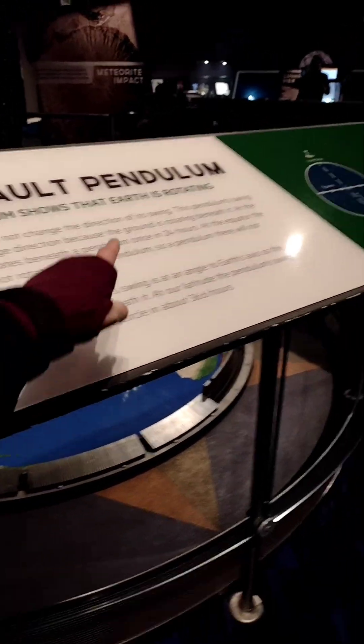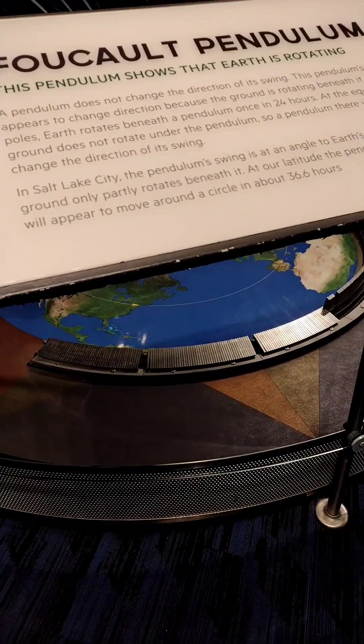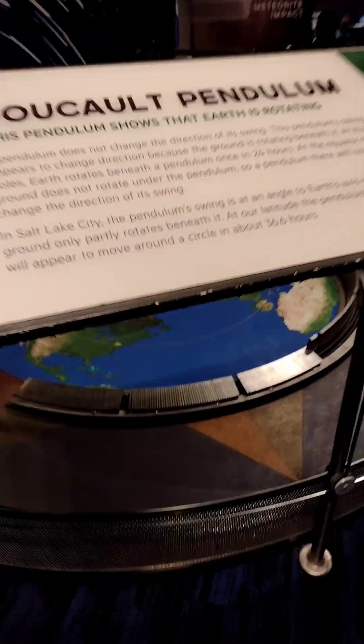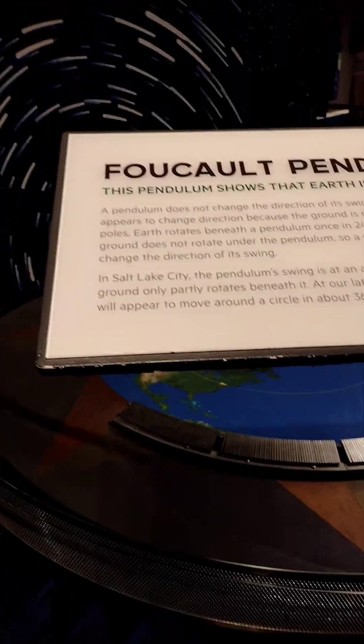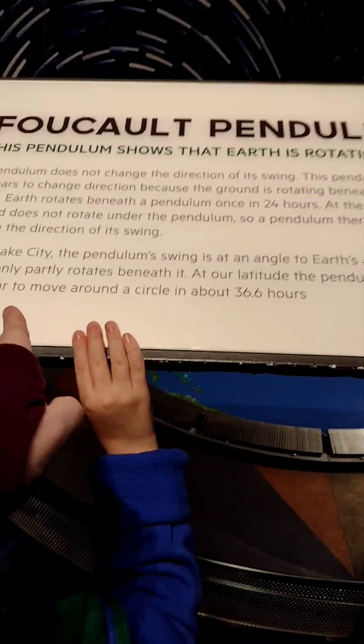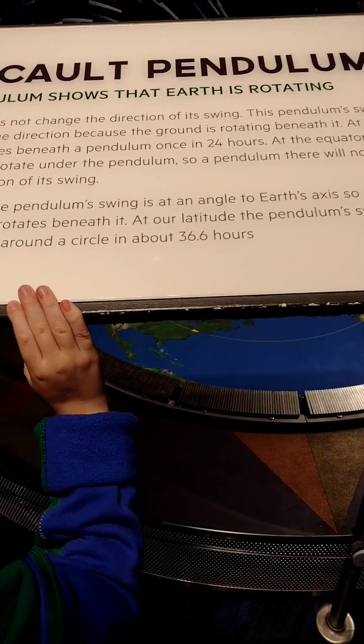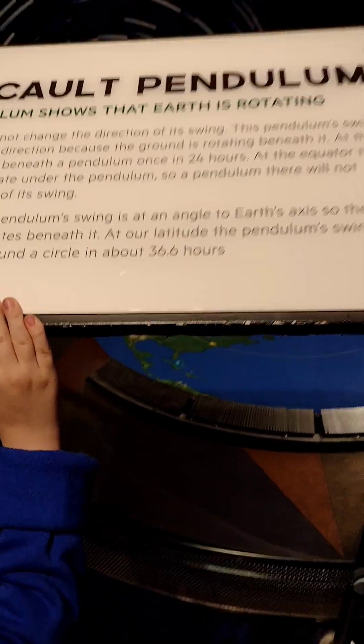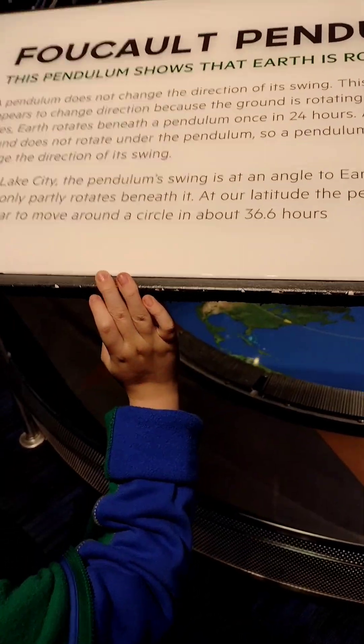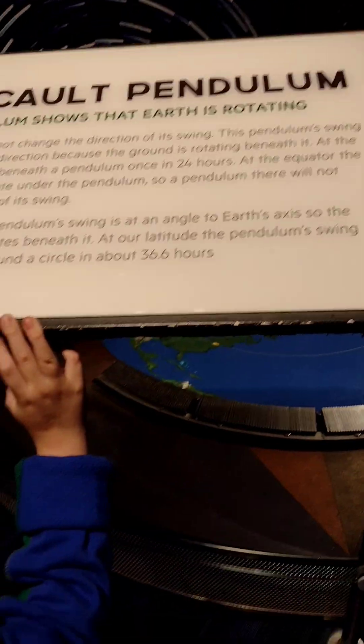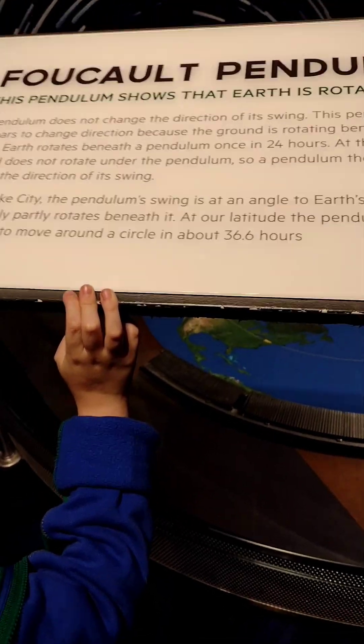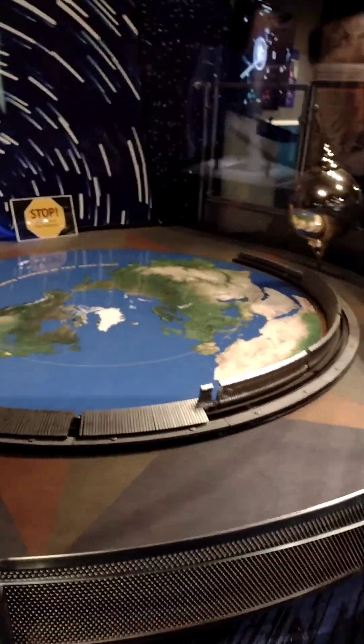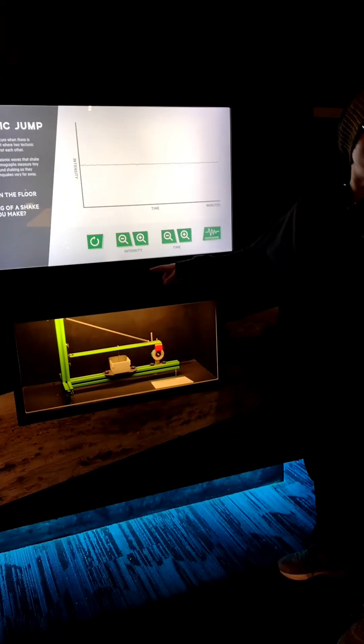Oh, that is moving. Yep. And that's why it says at the equator, even so, it feels like you're not moving. Is that why we sometimes randomly get anxiety sometimes? I don't think that has to do with it. At the equator, the ground does not rotate under the pendulum. So a pendulum there will not change the direction of its swing. In Salt Lake City, the pendulum's swing is at an angle to Earth's axis. So the ground only partly rotates beneath it. At our latitude, the pendulum swing will appear to move around a circle in about 36.6 hours. In a full circle? Uh-huh. That's how long it takes.